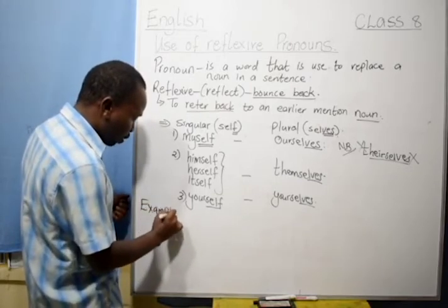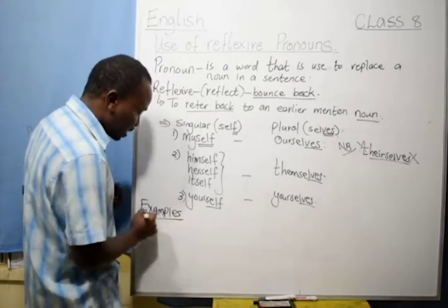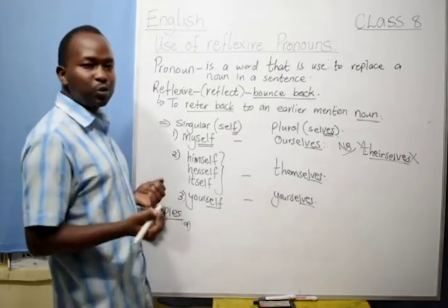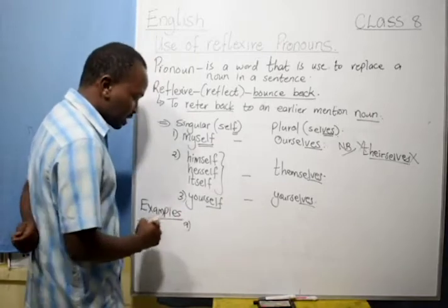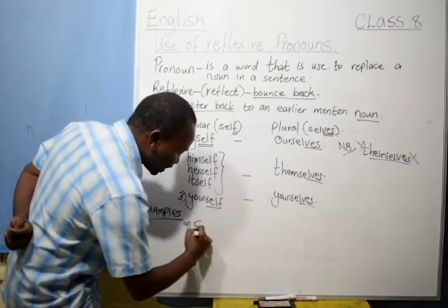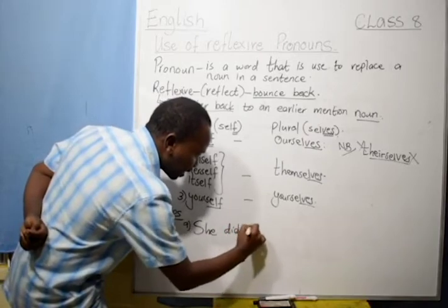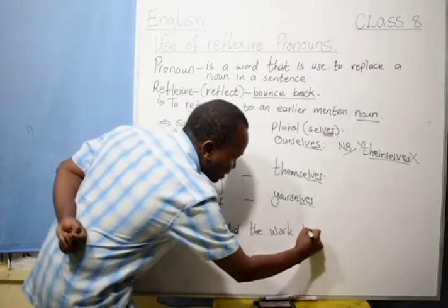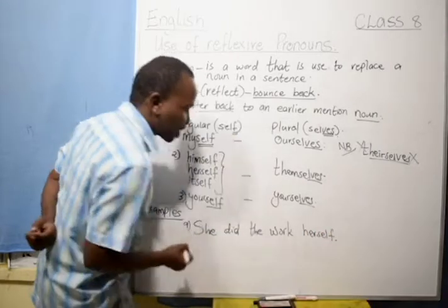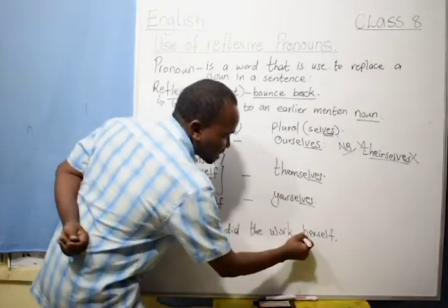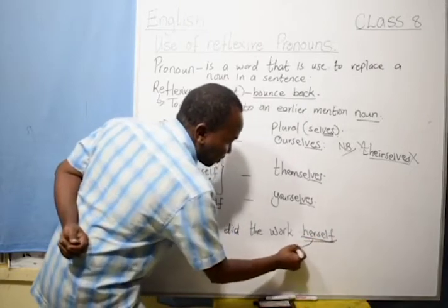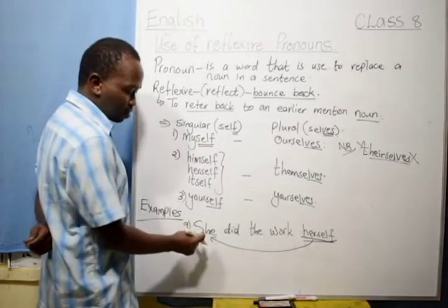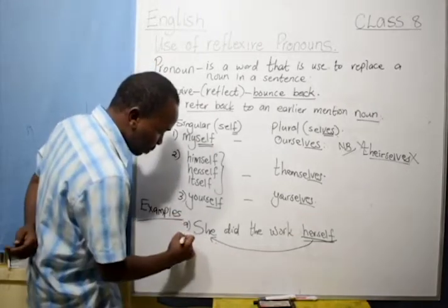Now, to see how these reflexive pronouns are used, it's better we have one or two examples that will guide us. And, we will be able to further understand how they are used in a sentence. For example, sentence number one. She did the work herself. So, therefore, this reflexive pronoun, herself, is referring to the pronoun she.